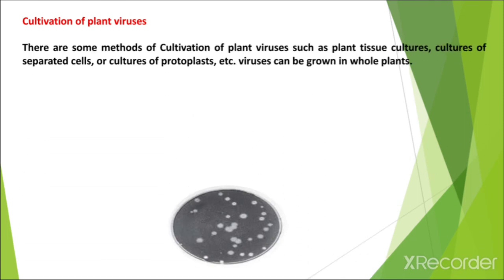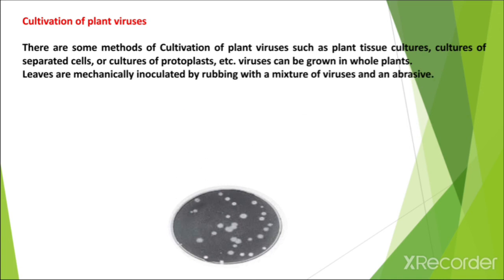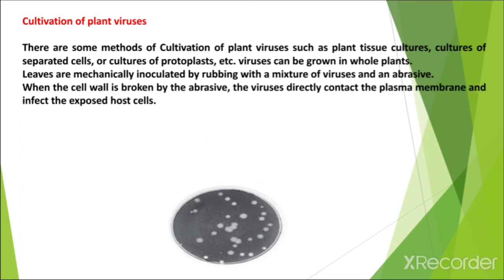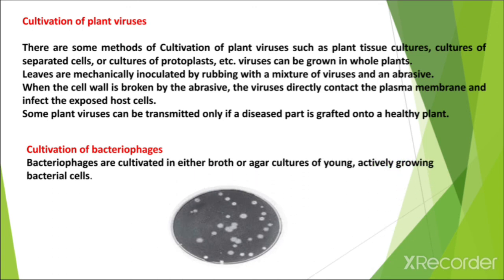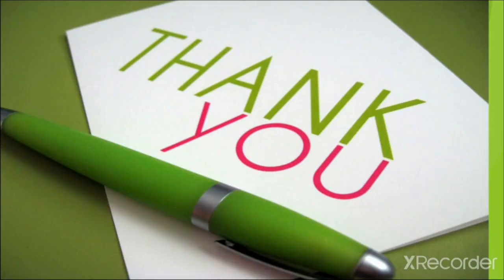Plant viruses can be cultivated using plant tissue cultures, cultures of separated cells, or cultures of protoplasts. Viruses can also be grown in whole plants by mechanically inoculating leaves — rubbing with a mixture of virus and an abrasive breaks the cell wall, allowing the virus to contact the plasma membrane and infect exposed host cells. Some plant viruses can only be transmitted by grafting a diseased part onto a healthy plant. Bacteriophages are cultivated in either broth or agar culture of young, actively growing bacterial cells.